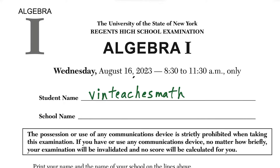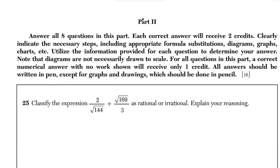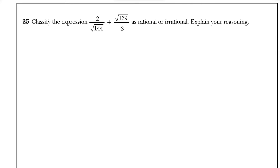What's up, I'm Vin and today I'm going through the August 2023 Algebra 1 Regents. In this video I'm going to do parts 2, 3, and 4. So let's get started. First up we have the part 2 questions and every question in this section is worth two credits. Question 25: we have to classify the expression 2 over the square root of 144 plus the square root of 169 over 3 as rational or irrational.